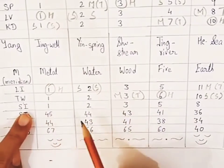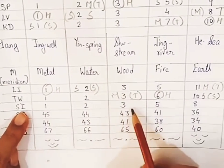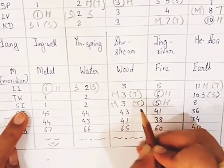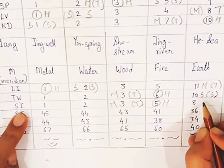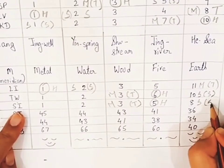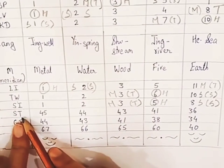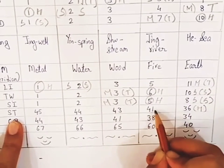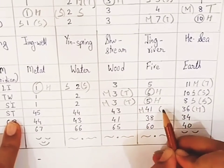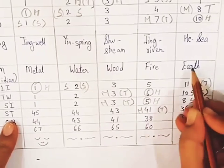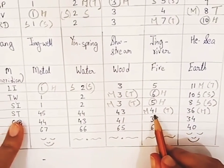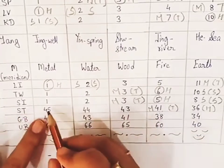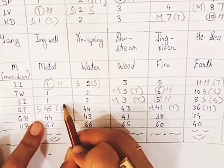Small intestine is a fire element, so the fire point of the small intestine meridian will be the horary point. SI3 is the mother point and may be used for tonification. SI8 is the son point and may be used for sedation. Stomach is the earth element, so the earth point of the stomach meridian becomes the horary point. The earth's mother is fire, so ST41 is the fire point and is previous to the horary point — hence it is the mother and tonification point. ST45 is the son point and may be used for sedation.